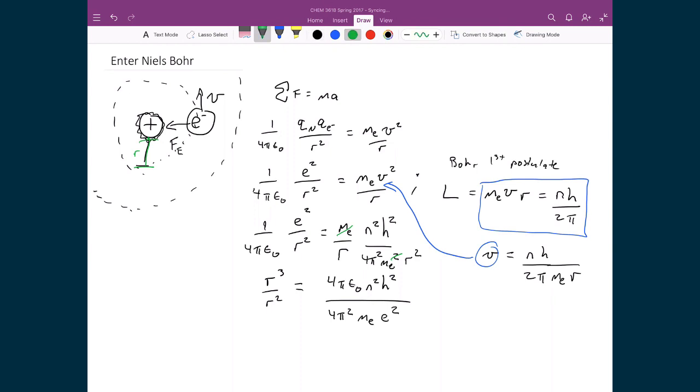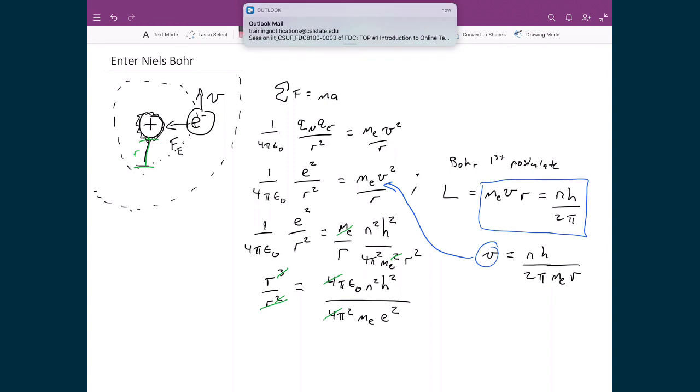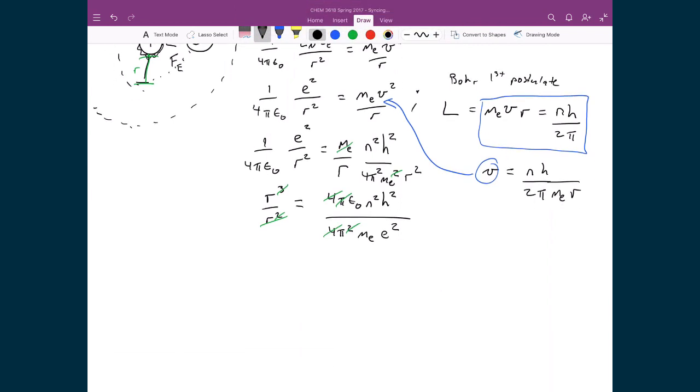And then of course I can cancel out the r cubed on top on the left-hand side with the r squared on the bottom. I have 4 on top, 4 on the bottom. I have a pi on top, pi squared on the bottom, so I'm going to cancel out that squared. And so what that means in the end then is that I'm going to get r is equal to epsilon naught n squared h squared all over pi me mass of the electron times e squared.